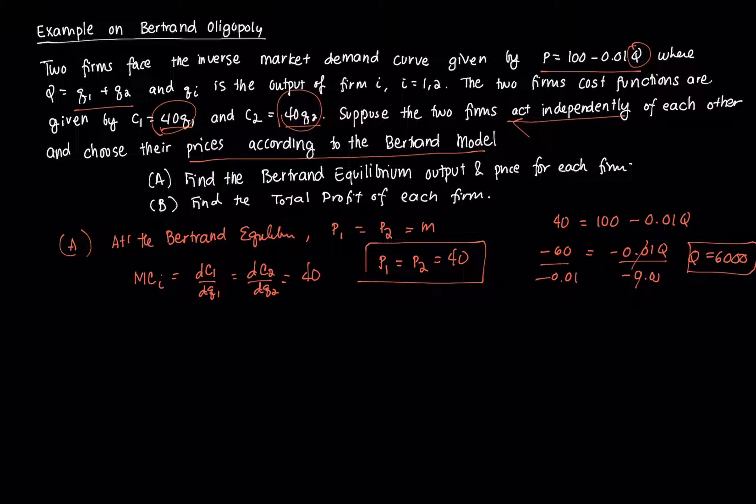Since the prices are the same, since we have a case wherein both firms charge the same, then they will split the market demand. So each firm supplies Qi which is equal to Q divided by N, which is the number of firms, that's 2. So that's 6,000 divided by 2. So each firm will supply 3,000 units for all i equal to 1 and 2.